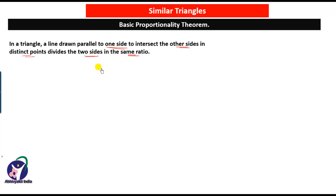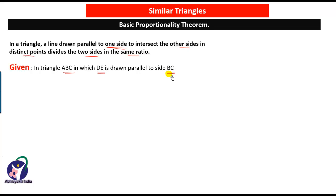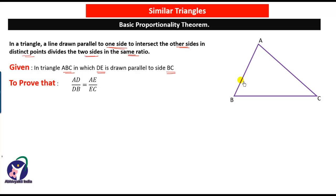This we have to prove. It is given that triangle ABC is given and DE is a line parallel to side BC. We have to prove that AD upon DB is equal to AE upon EC. In triangle ABC, DE is parallel to BC intersecting the other two sides at distinct points D and E.